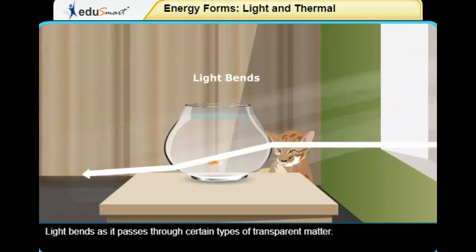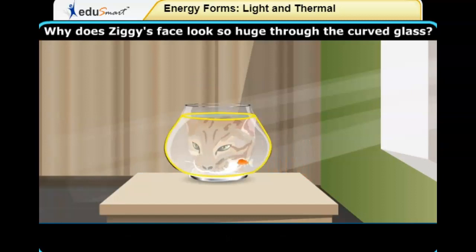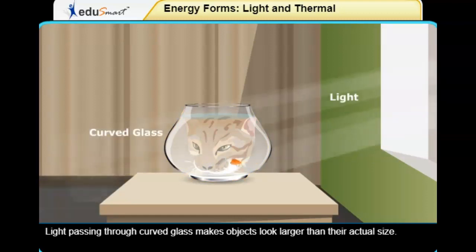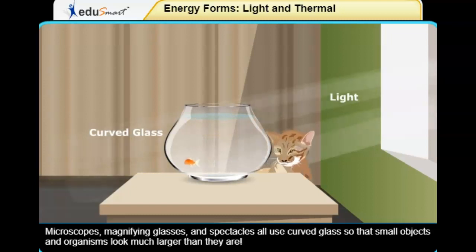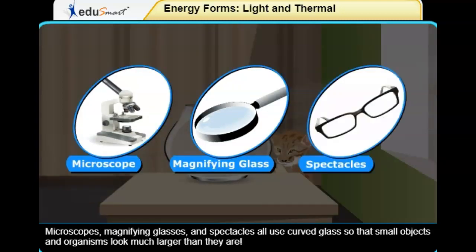Light bends as it passes through certain types of transparent matter. Why does Ziggy's face look so huge through the curved glass? Light passing through curved glass makes objects look larger than their actual size. Microscopes, magnifying glasses, and spectacles all use curved glass so that small objects and organisms look much larger than they are.